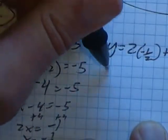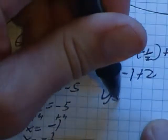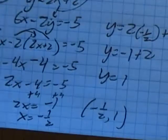2 times negative one half is negative 1. Negative 1 plus 2 is 1. So my answer is x is negative one half and y is 1.